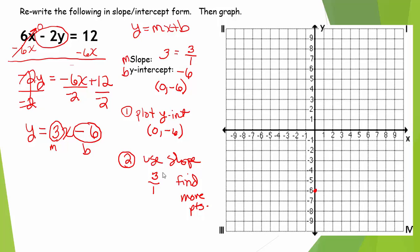Our slope is 3 over 1. The top number tells us up or down — since it's positive, we go up 3. The bottom number tells us move to the right 1. If it's a positive slope, we move up and to the right; a negative slope would mean down to the right. From that y-intercept, go up 3 to the right 1, continuing that pattern across the grid. To find points in the other direction, go down 3 to the left 1, giving us a beautiful straight line.